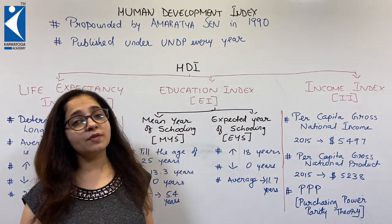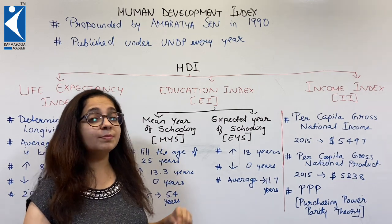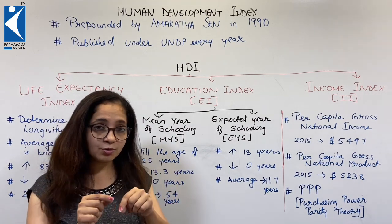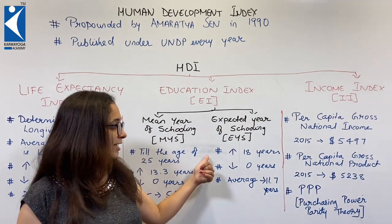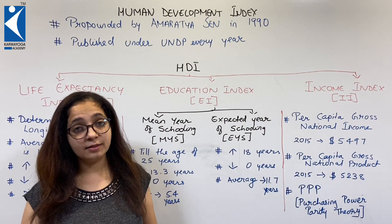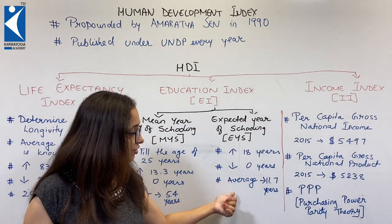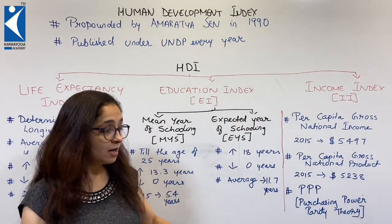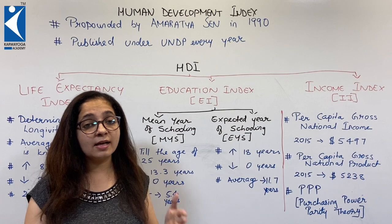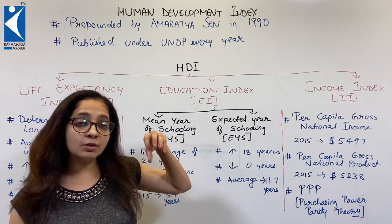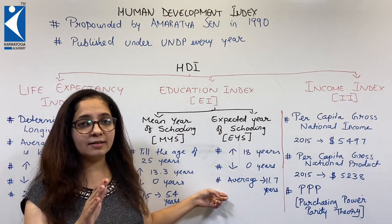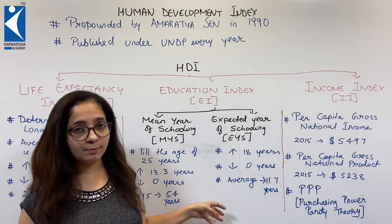The next sub-component is Expected Year of Schooling — how many years it is expected that a person might go to school. The highest is 18 years, meaning a child starting at 3 plus 18 equals 21, so it is expected that most people will at least graduate. The lowest is zero, and the global average is 11.7 years — roughly 12 years, which corresponds to up to 9th standard. Under the free and compulsory education bill of 2009, at least until 9th standard, a person should receive education.